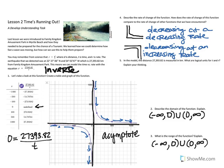In the model, the distance of 27,393.82 is measured in kilometers. What are logical units for t and for r? So if we think about this, our r is our rate equals our kilometers over our time. So we know our rate has to be kilometers per something. If we think about what our time is, if our time was in seconds, kilometers per second—so that's saying that our speed is 27,000 kilometers per second. That is ridiculously fast and does not make logical sense.